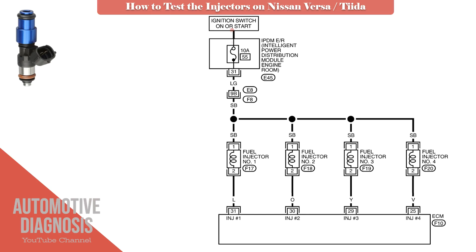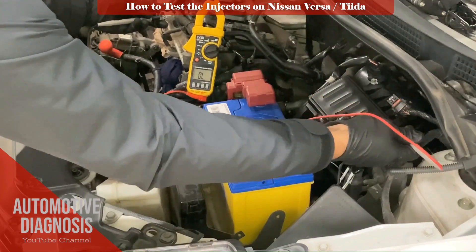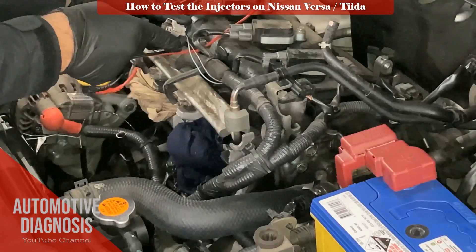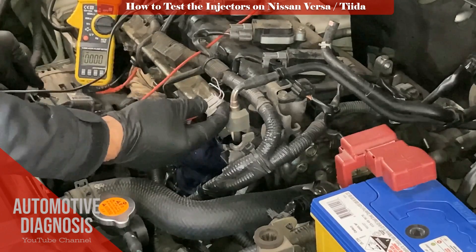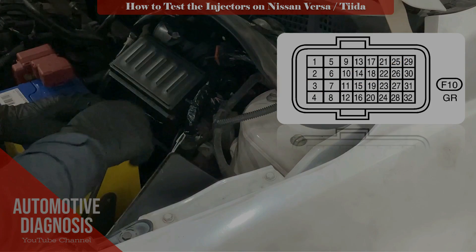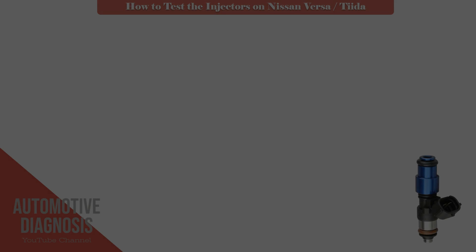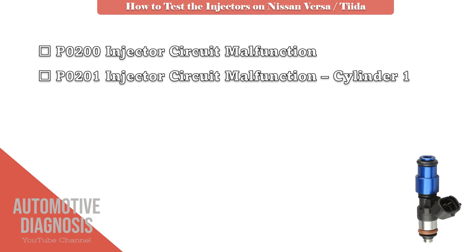Hello and welcome to the Automotive Diagnosis YouTube channel. In this video we will diagnose the fuel injectors on Nissan Versa or Tida in case you have the injectors fault codes, including P0200, P0201, P0202, P0203, and P0204. Also misfire or air-fuel ratio problems can happen due to a faulty injector.